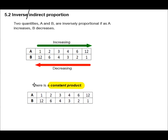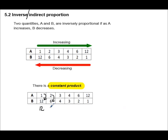In inverse proportion, there is a constant product — product meaning multiply. So, 1 times 12 gives 12; 2 multiplied by 6 gives 12; 6 multiplied by 2 gives 12. Every time we multiply these two values together, the answer remains the same — there is a constant product.